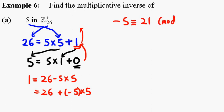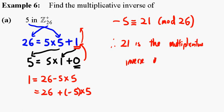So hence, 21 is the multiplicative inverse of 5 in Z26. See you next time.